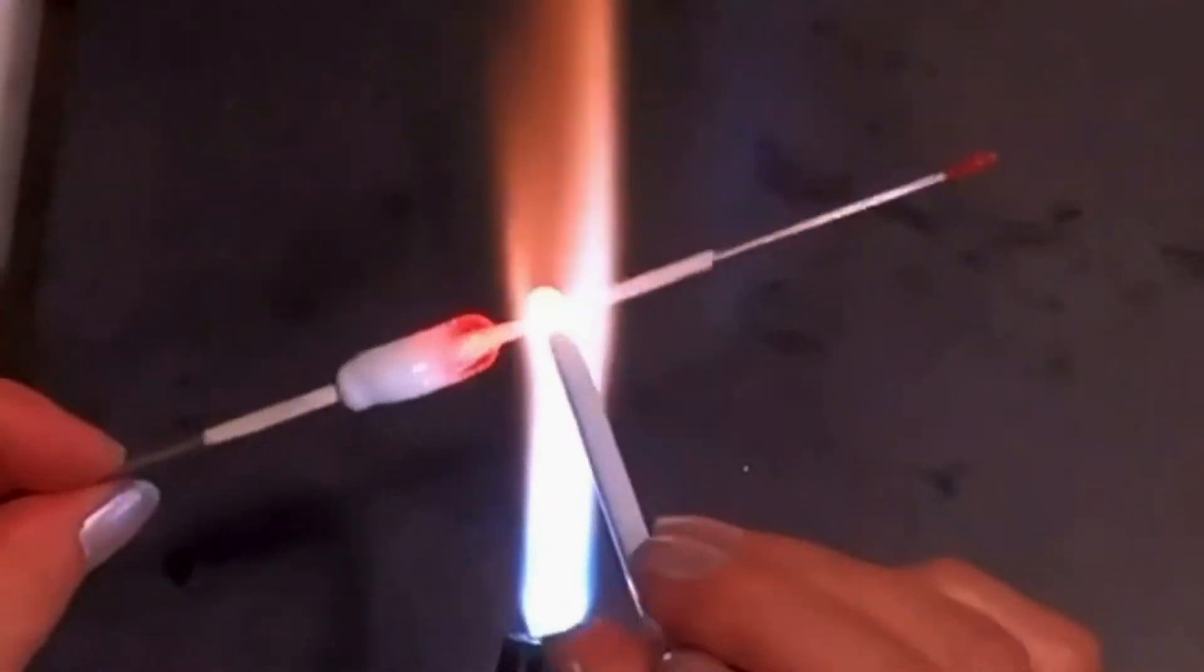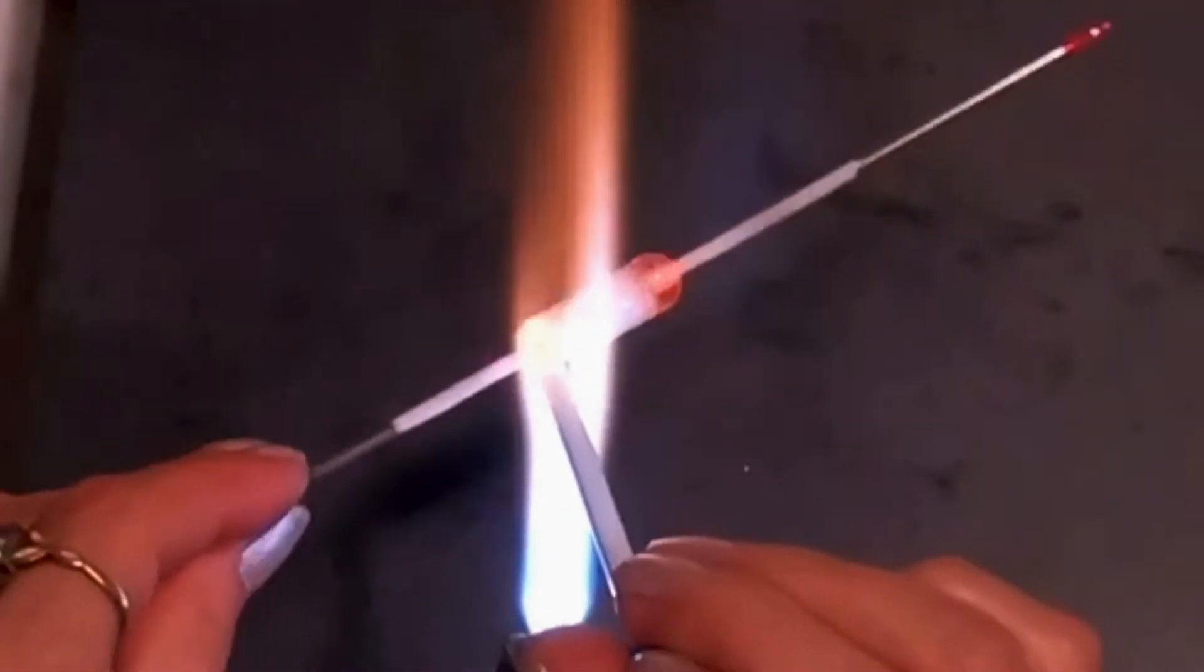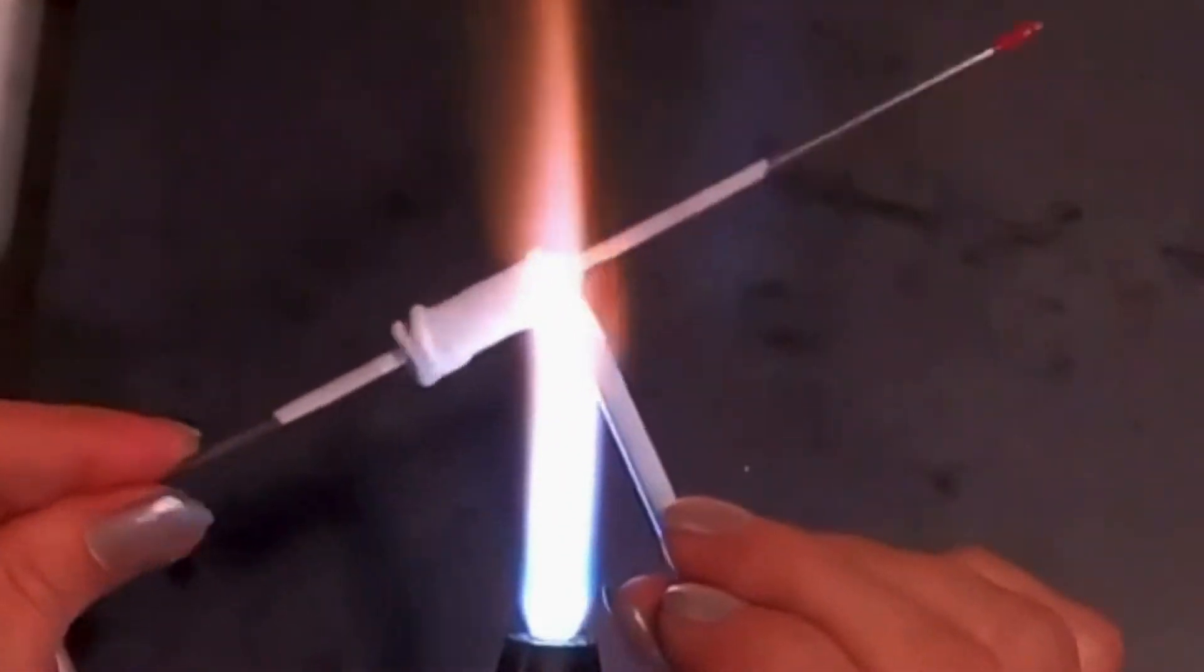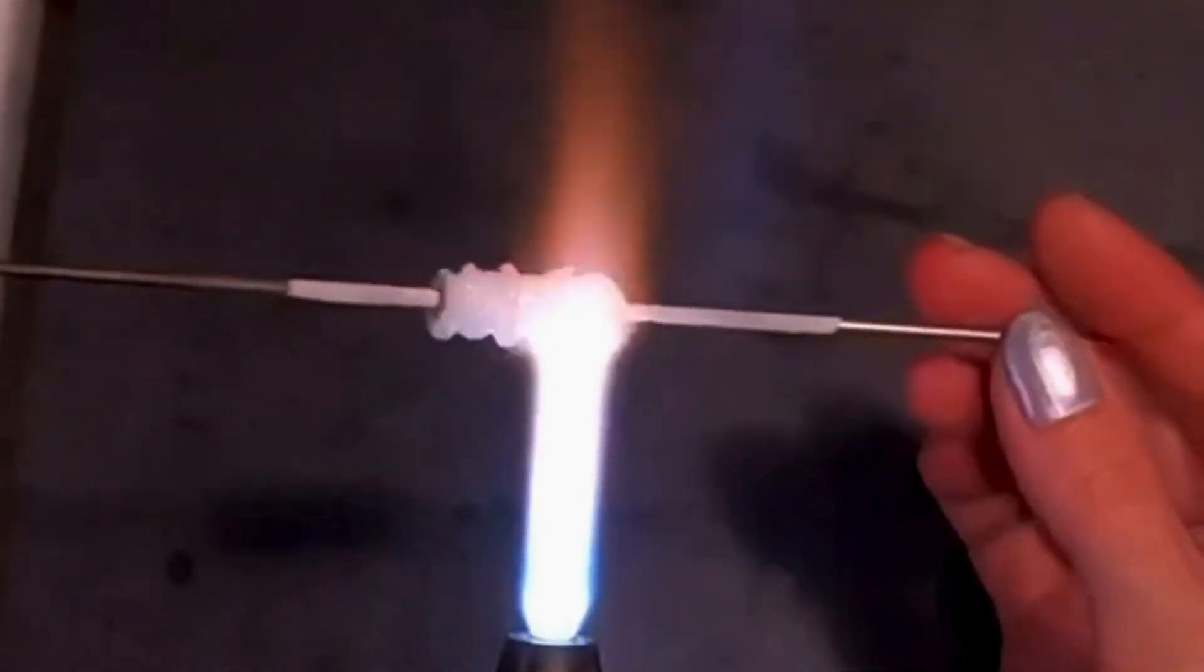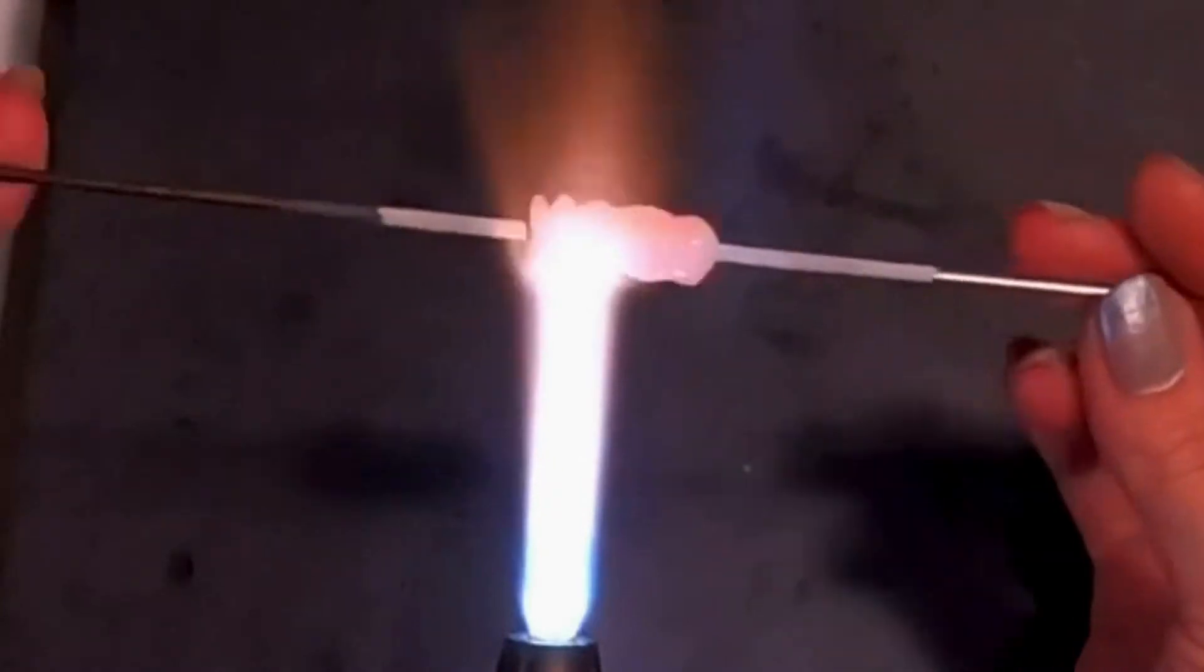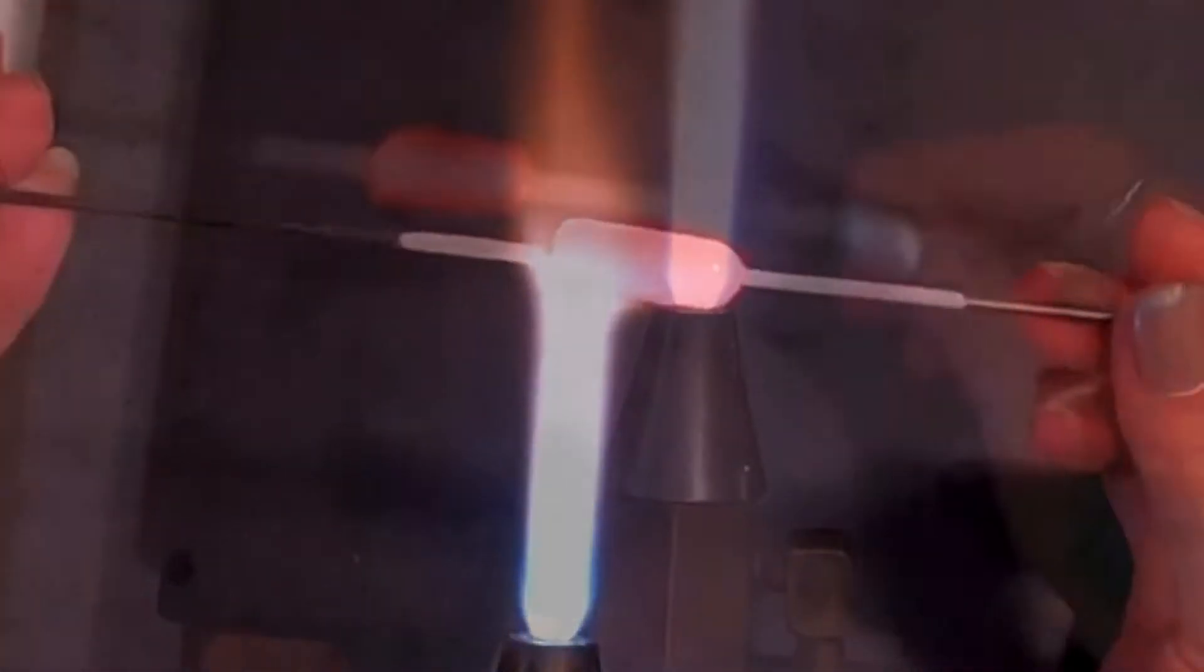I want this to be a nice long—I know I always say football shape—but it's just going to be a nice oval pendant. I know I'm going to be adding a lot on this, so I don't want this center core to be too big. That's important.